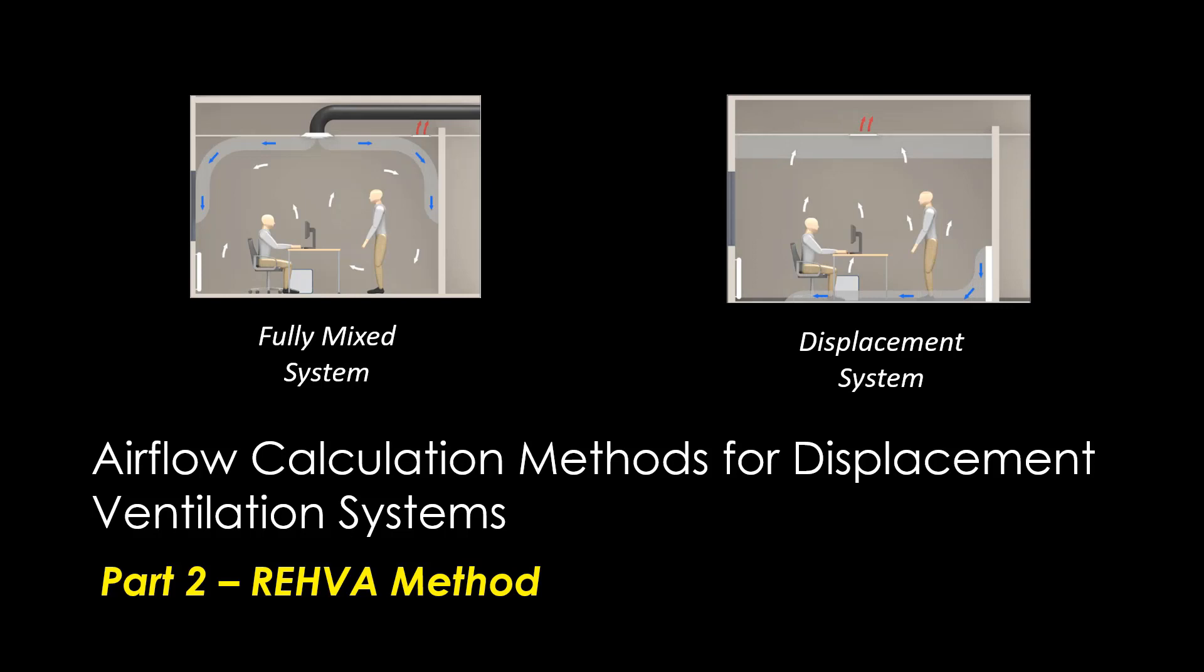In part one I covered the ASHRAE calculation method which I would recommend watching before jumping into this part two where I will be describing the European REHVA method. The two methods differ slightly in that the REHVA process does not involve applying correction factors to individual heat gains but is based on applying typical space temperature gradients to calculate acceptable supply and return temperatures. The difference between the supply and return temperatures is then used to calculate the required airflow to accomplish the space sensible cooling.